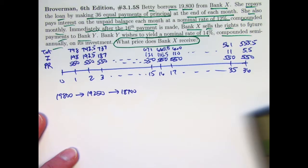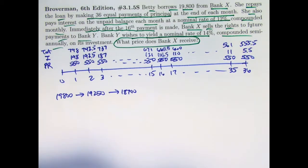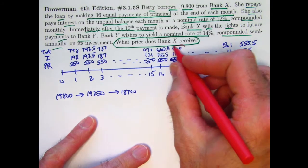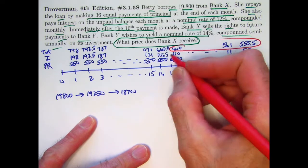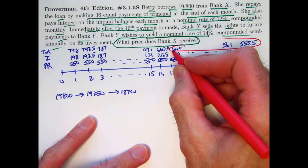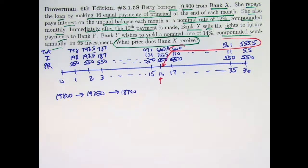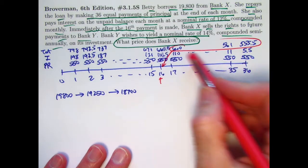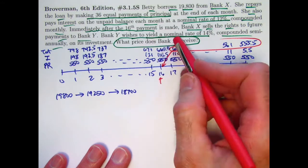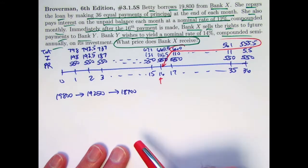So what do we do now here? We look at the question again. We want to value the remaining payment stream just after the 16th payment, value it at time 16 for Bank Y in such a way as with this payment stream, they're getting a yield of 14% compounded semi-annually.